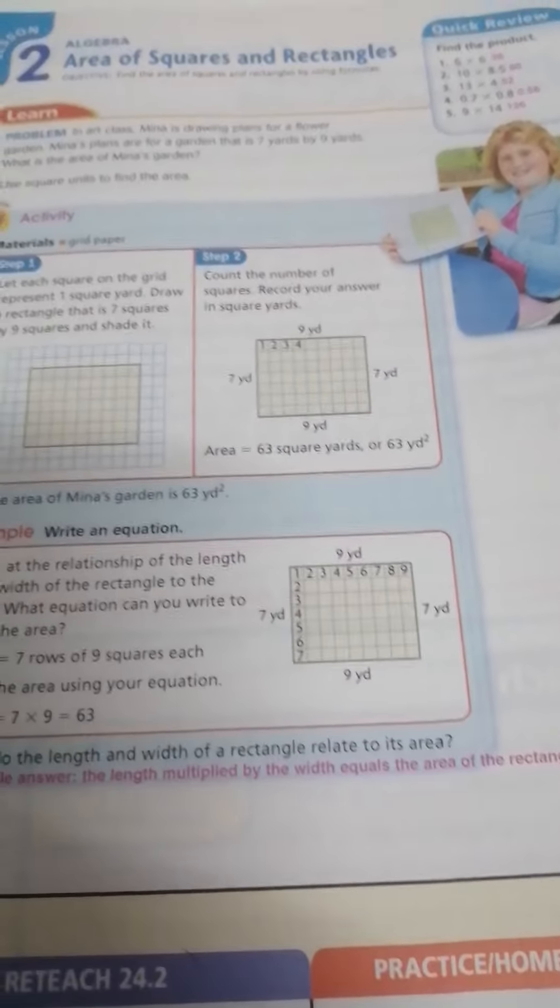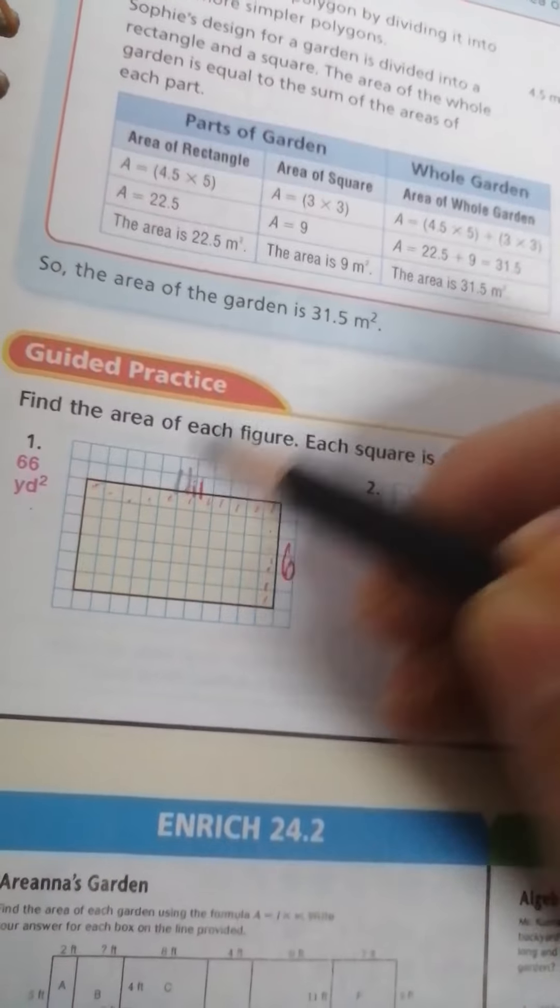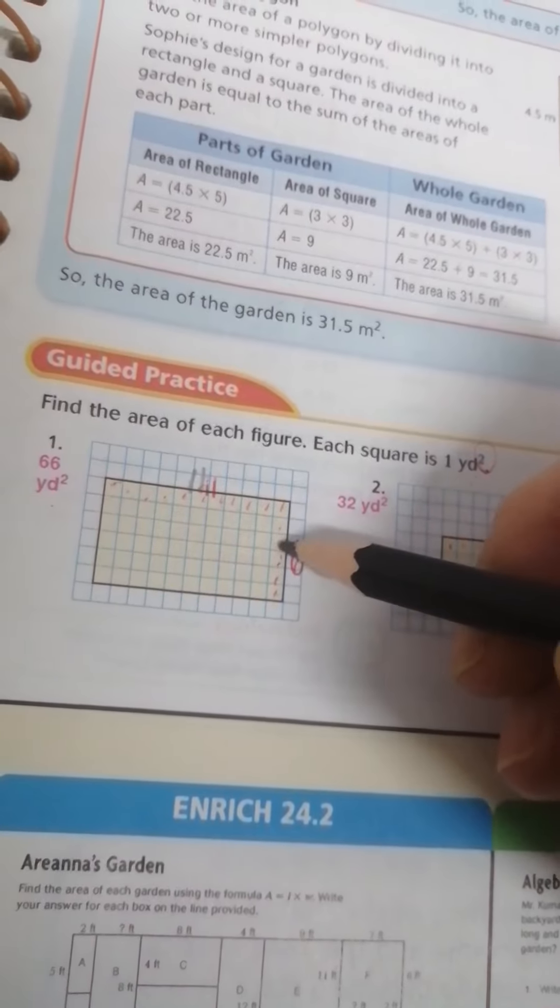Each square is one yard square. Look at here, how many width and length? Look at here, 1 2 3 4 5 6 7 8 9 10 11, and here 1 2 3 4 5 6. 11 by 6, multiply 11 by 6 equals 66 square yards.